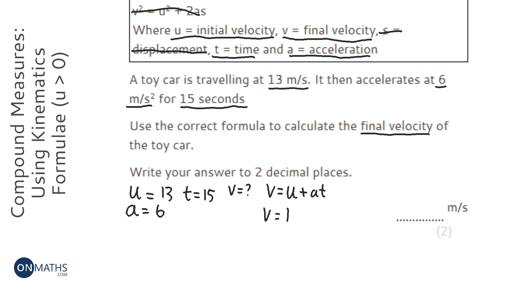v equals u, which is 13, plus a times t. Put that into the calculator: 13 plus 6 times 15, and it gives us 103. So the answer is 103 meters per second.